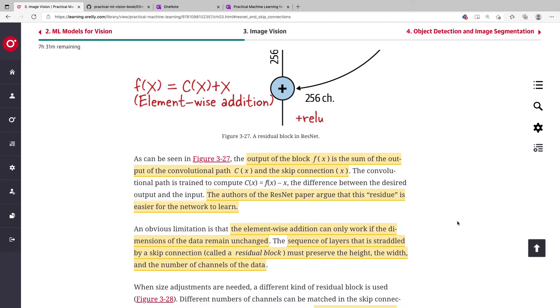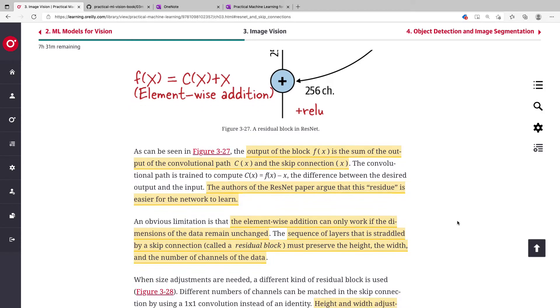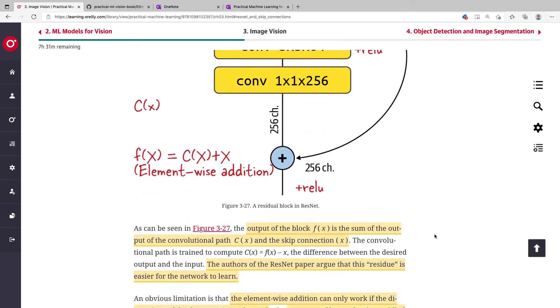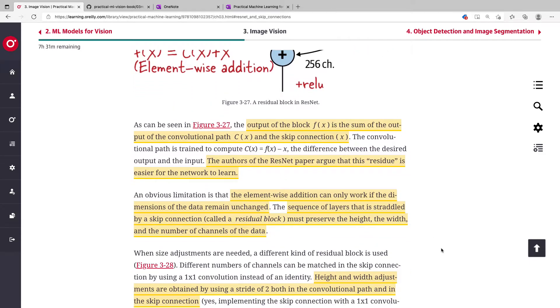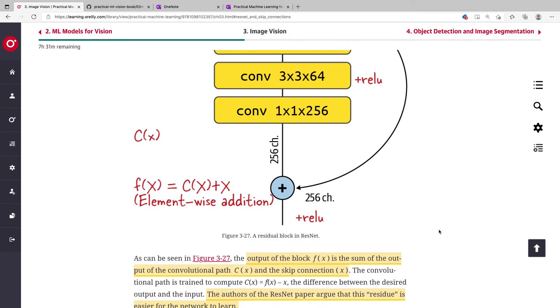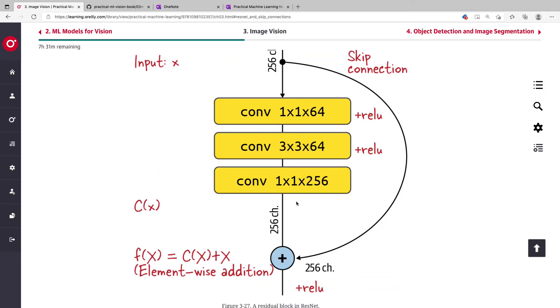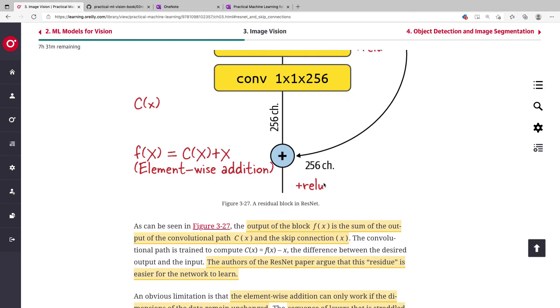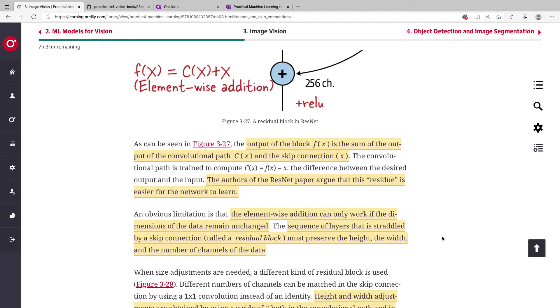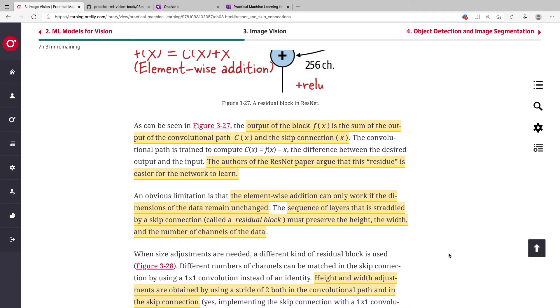Now, as you can see here, you have some modifications of different variations. If this block changes the width and height, then you won't be able to do the element-wise addition. The element-wise addition can only work if the dimensions of the data remain unchanged.